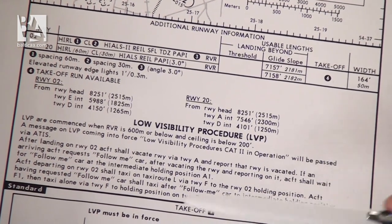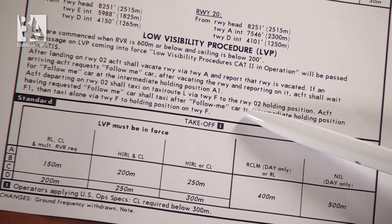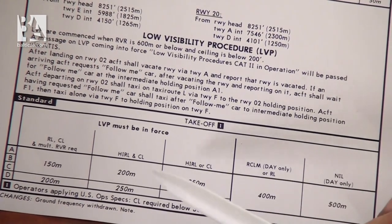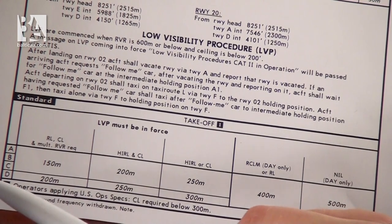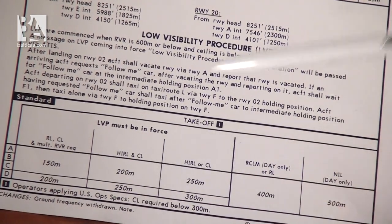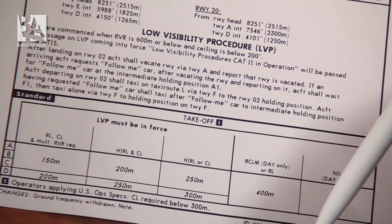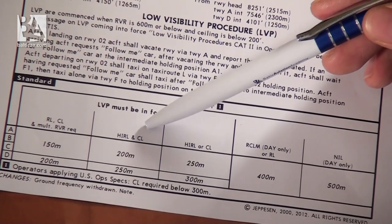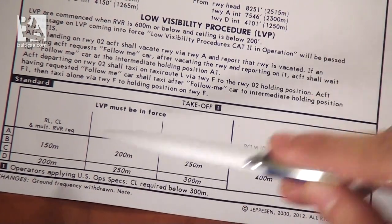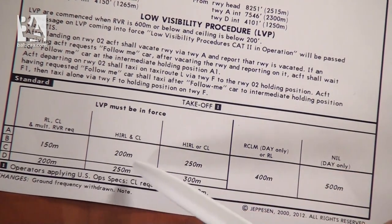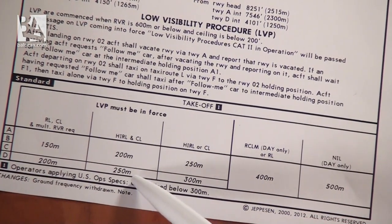Below all of this we have information regarding the low visibility procedures, which tell you how they are done and what the minimums are, especially for takeoff. It says that low visibility procedures must be enforced and gives limitations regarding operable lighting systems. For example, if you have operable high intensity runway lights and centerline lights, for aircraft categories A, B and C the visibility requirement applies, while for Category D you need 200 meters of visibility for departure, or 250 meters under other conditions.